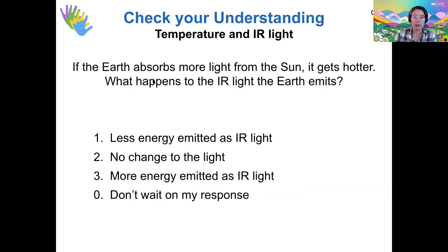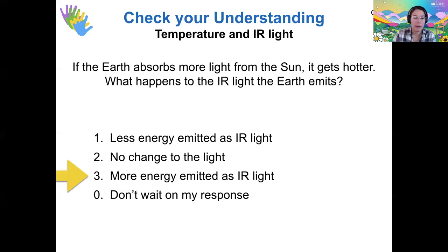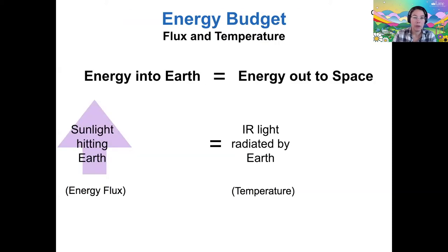Question: if the Earth absorbs more light from the sun, it will get hotter — what then would happen to the infrared light that the Earth emits? Most votes are for option three, and that's exactly right. If we absorb more light and our temperature becomes higher, then we will emit more energy as infrared light. This is what keeps Earth in balance: if we increase the sunlight hitting Earth, we also increase the infrared light radiated by Earth, and our energy balance is restored.